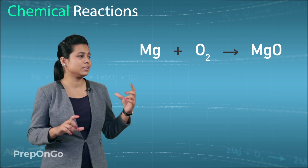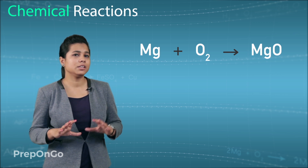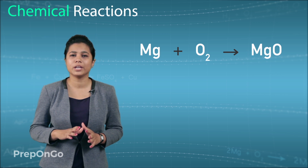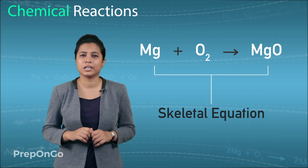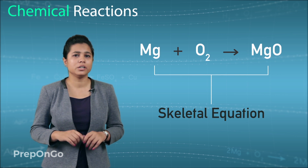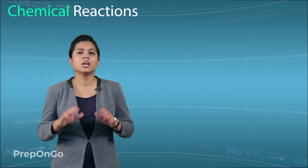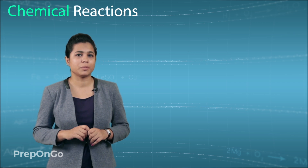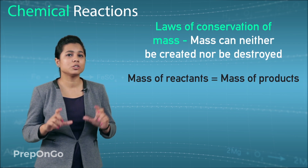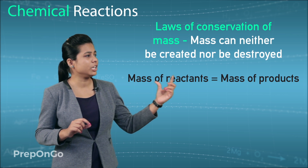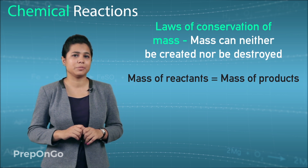These equations require that the number of atoms be equal on both sides. If they are not equal, the mass becomes unequal on both sides, and such an equation is called a skeletal equation. It is important to balance chemical equations because of the law of conservation of mass, which states that mass can neither be created nor destroyed — meaning the mass of reactants on the left hand side must equal the mass on the right hand side.